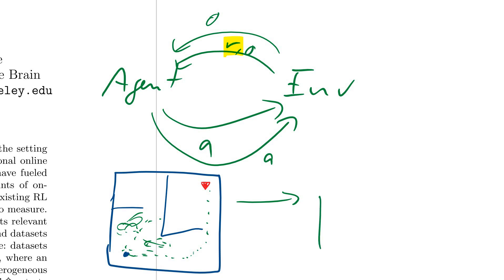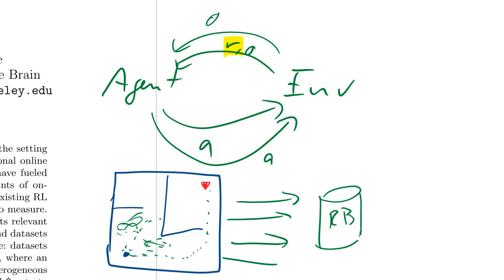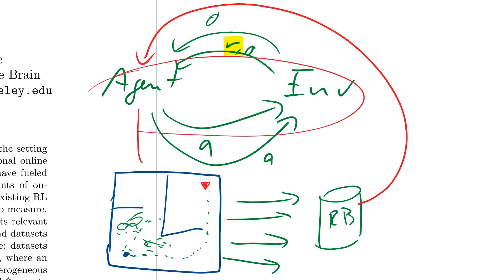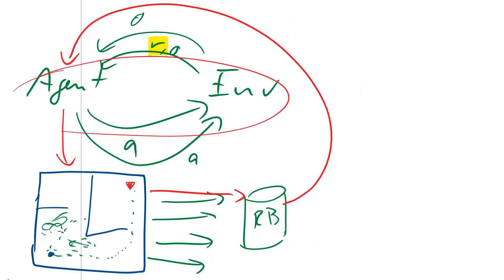Each episode gets stored in a replay buffer. At the same time you're doing this, you're using the things stored in the replay buffer to learn. The agent acts with the environment, puts each episode into the replay buffer, and learns from the actions it has performed. This is what is usually called online reinforcement learning — online because the agent learns from its own actions.